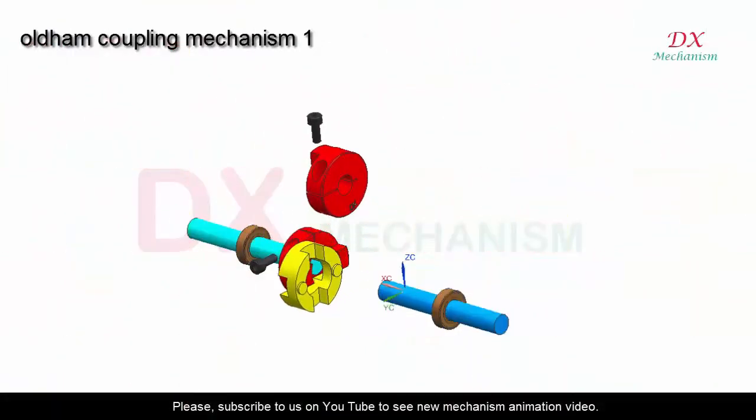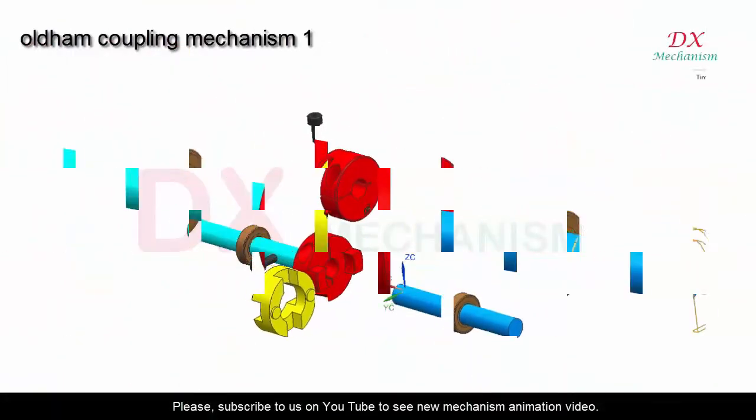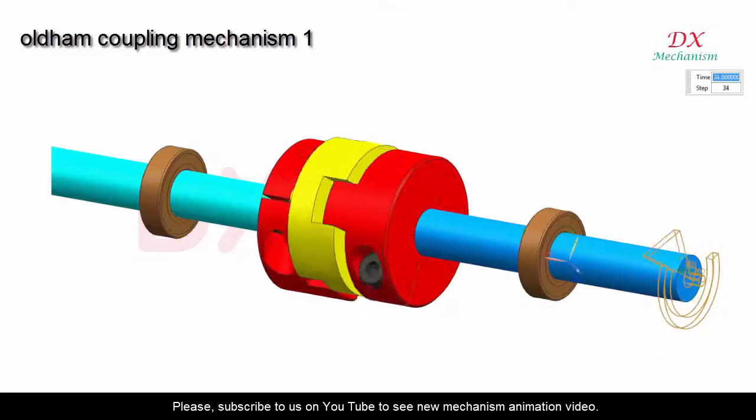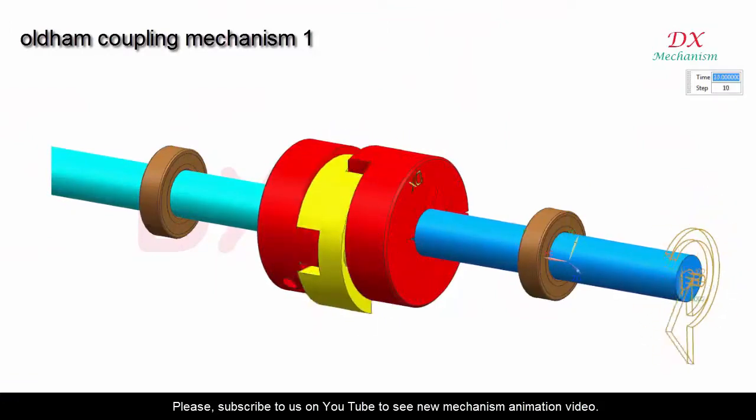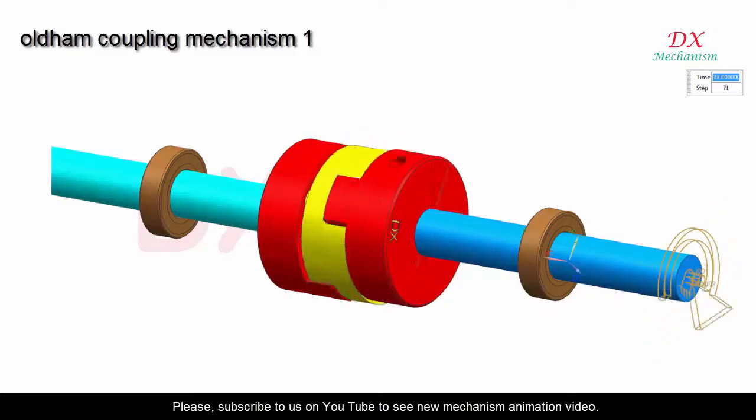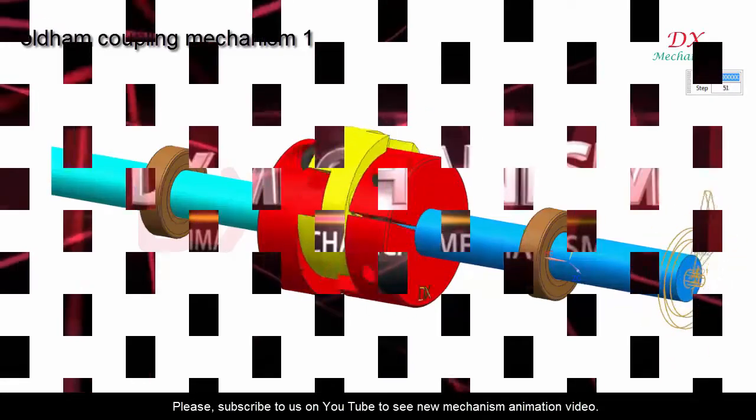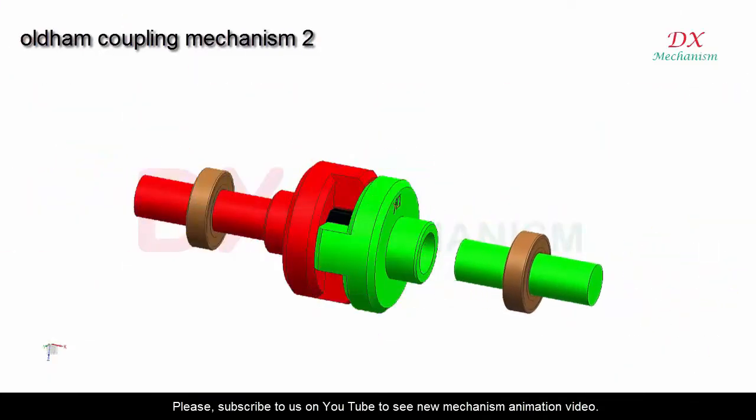Oldham coupling mechanism example one. Brown color is the bearing. Left and right discs are red, used to connect with two shafts using bolts for clamping. The yellow disc connects the left and right discs and can slide on them.